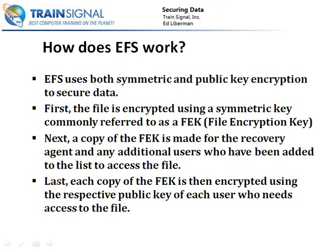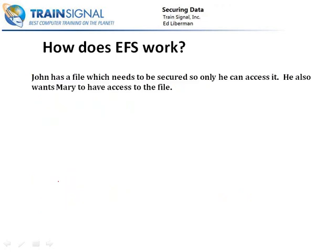The last step is that each copy of the FEK is then individually encrypted using the respective public key of the user who needs to access the file. The user's public key will be used to encrypt the first copy of the File Encryption Key. The second copy will then be encrypted using the public key of the recovery agent. And if there was one additional user, there would be a third copy of the File Encryption Key encrypted using the public key of that separate user. I know that's pretty confusing, so let me see if I can illustrate this to make it make a little more sense.